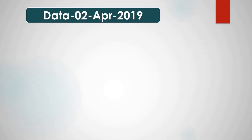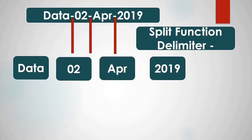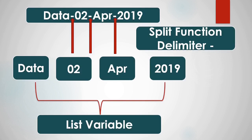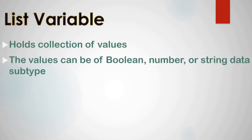Our file name is in the format of 'data', then date, month, and year — all these fields are joined with a dash. To extract the date, month, and year separately, we are going to use the split function with the delimiter as dash. Once we do this, the output will be data, date, month, and year stored inside a list variable. This list variable holds a collection of values that can be of type boolean, number, or string.